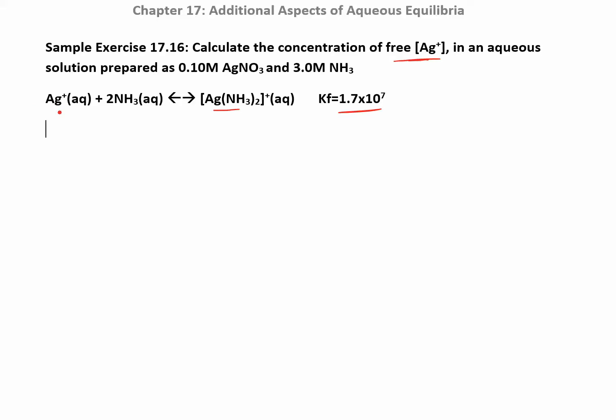We have to make two ICE tables. The first one isn't really an ICE table — it's asking what happens if we go all the way in the forward direction and use up at least one reactant, like a limiting reactant problem. Then we're going to backtrack. Remember: if you have a big K in the forward direction, it's going to be really small in the reverse direction, and that's going to be important for us later.